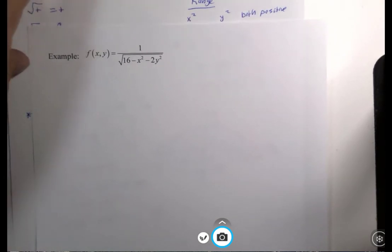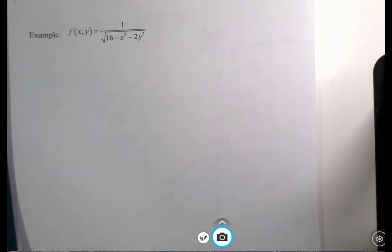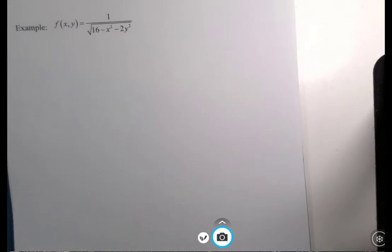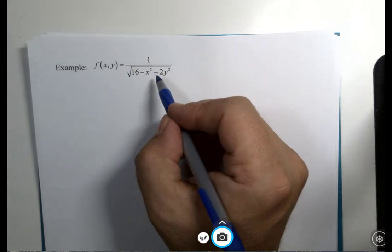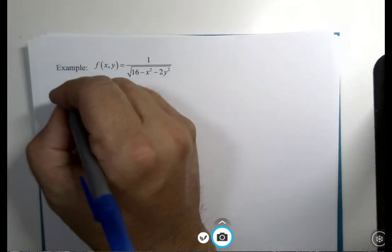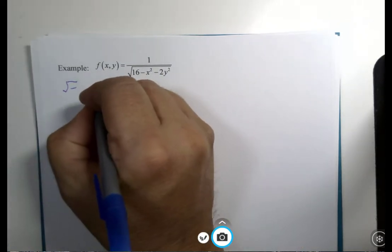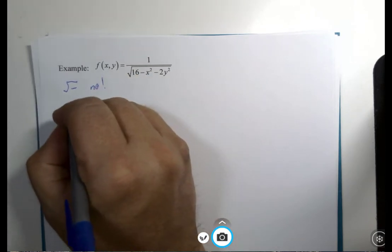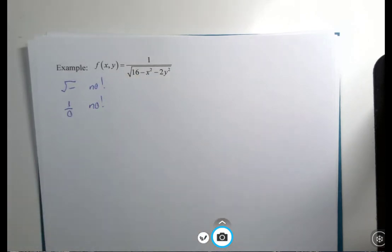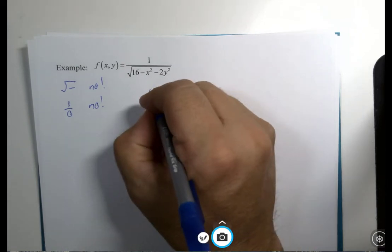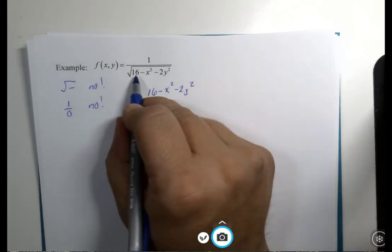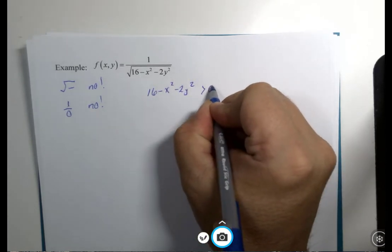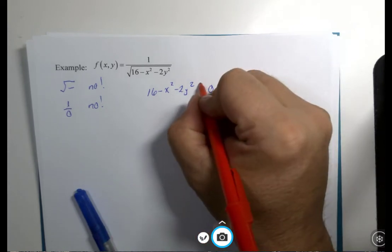Now let's take a variation on this function. This version of the problem is nearly equivalent, but remember, the square root of negative is bad, but also dividing by zero is bad. So this problem, 16 - x² - 2y², has to be greater than zero, now with no equal sign.